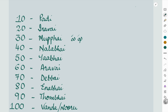10 is called 'padhi', 20 is called 'irabai', 30 is 'mupbhai' — in Telugu we have 'pha' — 40 is 'nalabhai', 50 is 'yaabhai', 60 is 'arabhai', 70 is 'debbhai', 80 is 'enabhai', 90 is 'tumbhai', and 100 is 'vanda' or 'nooru'.